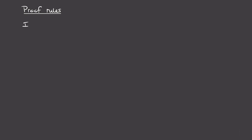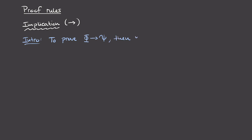Let's start with our first connective: implication, written using single arrow notation. The introduction rule for implication says that if we want to prove a statement of the form φ → ψ, we assume φ — adding it to our givens — and then prove ψ based on this additional assumption. This introduction rule has a special name: it's called the deduction rule, or in formal logic the deduction theorem.